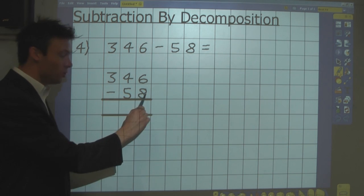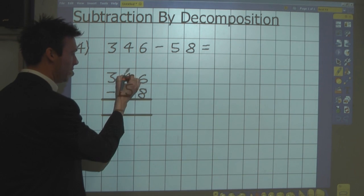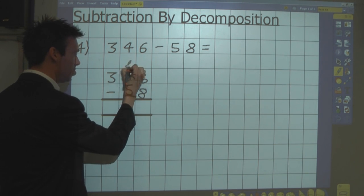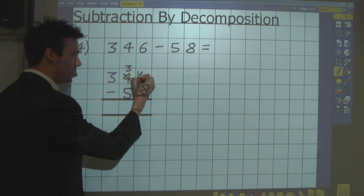I can't actually do that, so I have to go to the tens column, and I take one of the tens, leaving me with three tens here, and I turn that into 10 units.